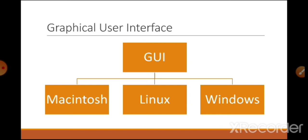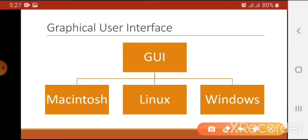The graphical user interface is used in three most famous operating systems: Macintosh, Linux, and Windows. Among these three, Windows operating system is the most popular, and most of us have Windows on our computers and laptops.